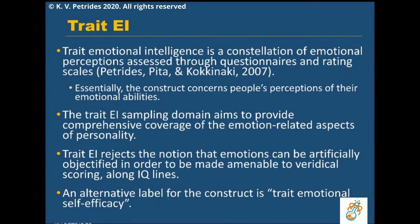Trait EI rejects the notion that emotions can be artificially objectified in order to be made amenable to veridical scoring along IQ lines. The theory is antithetical to the idea that emotional experience can be squeezed into another primary factor of IQ testing. It really sees EI as a much broader area that has inherent subjectivity associated with it.